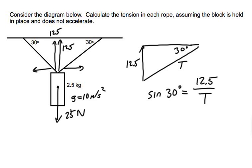So I can rearrange this and say that T equals 12.5 divided by the sine of 30 degrees. So when I plug that into my calculator, make sure I'm in degree mode, 12.5 divided by the sine of 30.